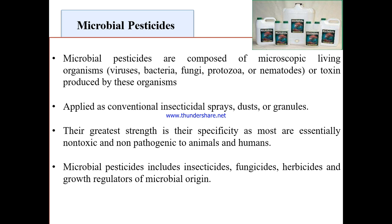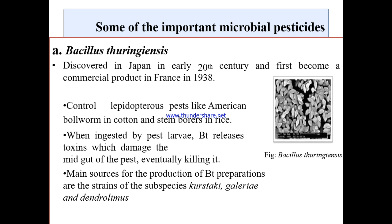Microbial pesticides include insecticides to kill insects, fungicides to kill fungal disease organisms, herbicides, and plant growth regulators of microbial origin. Bacillus thuringiensis (BT) was discovered in Japan in the early 20th century and first became a commercial product in France in 1938. It can control pests like American bollworm and Helicoverpa. When ingested by pest larvae, BT releases toxins that damage the midgut of the pest, eventually killing it.